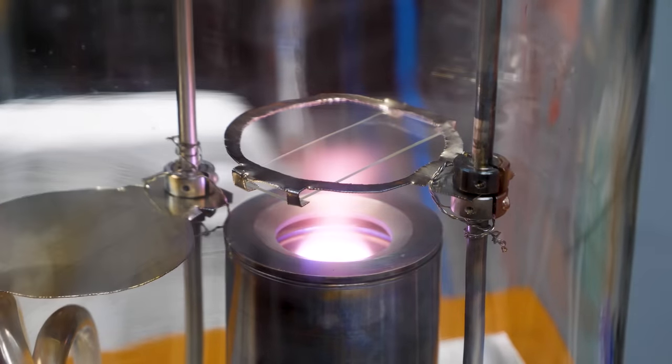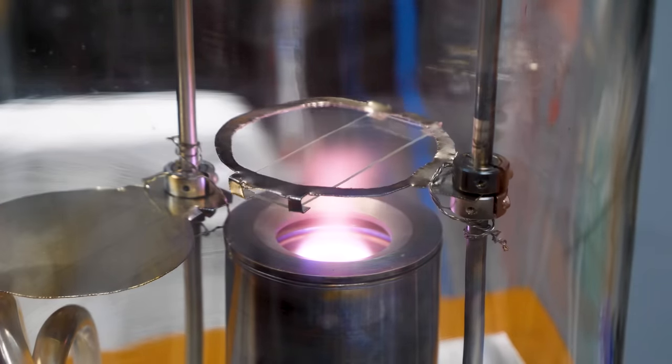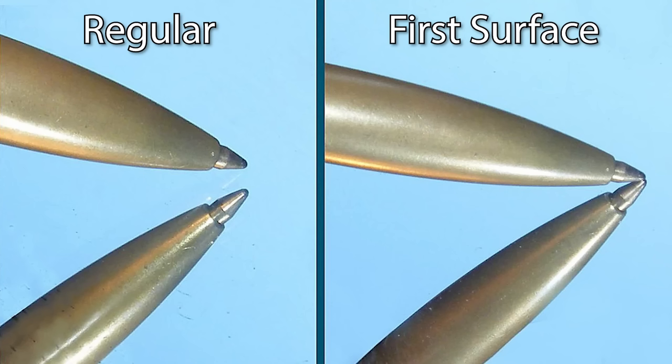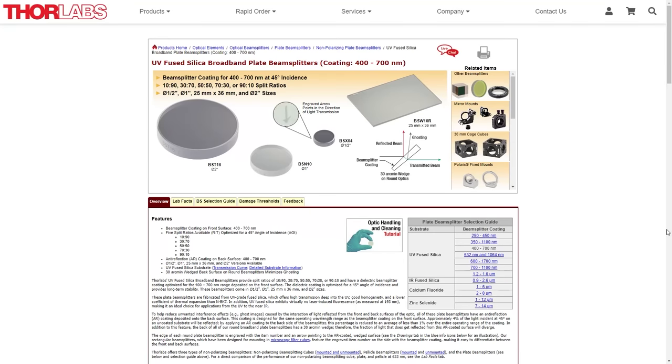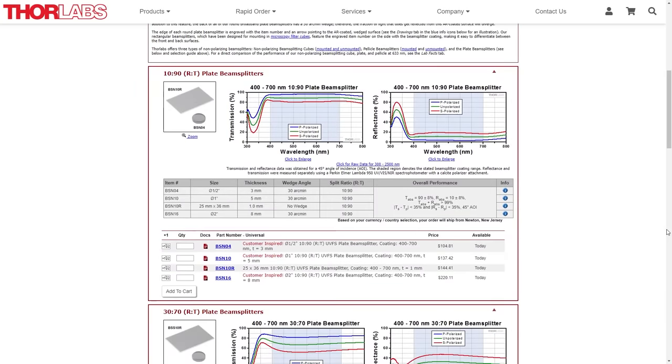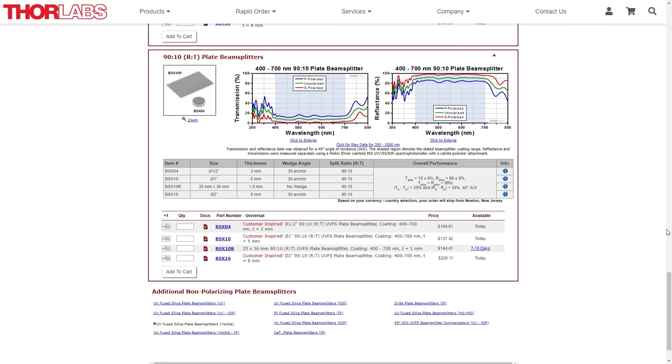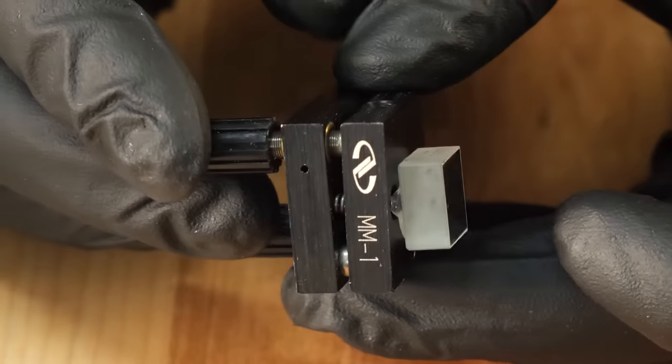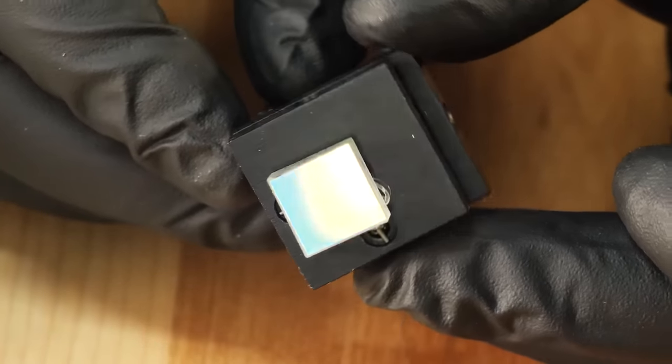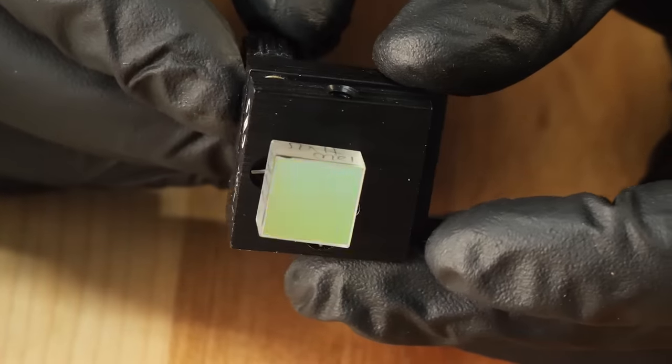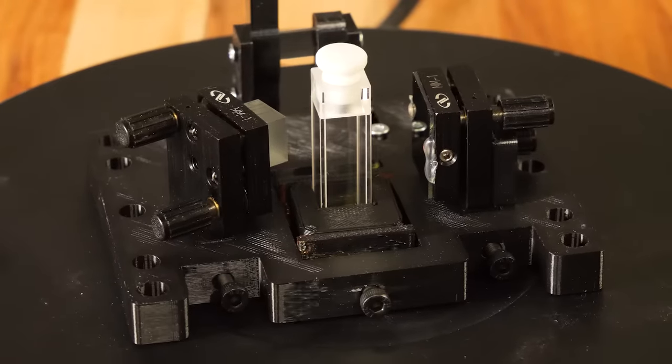For the mirrors, we actually made our own using our magnetron metal coating machine, but they just as easily can be bought online. Just look for first surface mirrors and 90 to 10 plate beam splitters. The latter being a partially silvered mirror that will let about 10% of the light through. Sites like Thor Labs carry all this kind of stuff for fairly cheap. The mirror mounts I got on eBay for about 50 bucks a piece, and they will allow the mirrors to be carefully adjusted in all three directions.